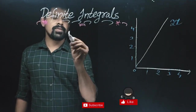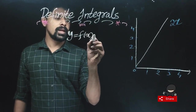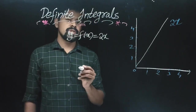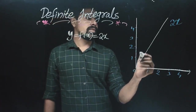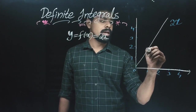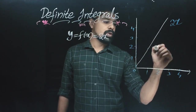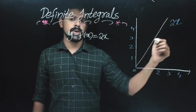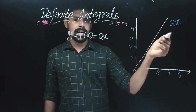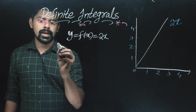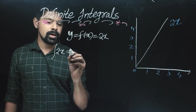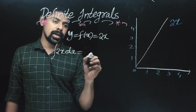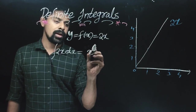We will show the function y = f(x). If we take f(x) = 2x, then the integral of 2x is 2x raised to 2 divided by 2, that is, x squared plus C.